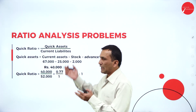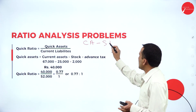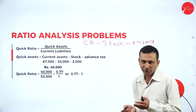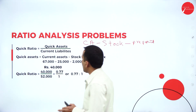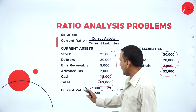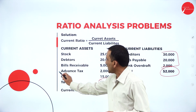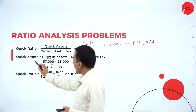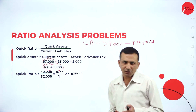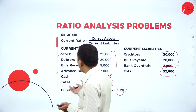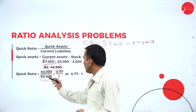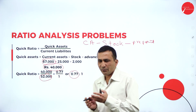Moving to quick ratio: from current assets of 67,000, we subtract stock and advance tax — two items — to get liquid quick assets of 40,000. Divided by current liabilities of 52,000, the quick ratio is 0.77, compared to the standard of 1. Keep watching for the next session. Thank you.